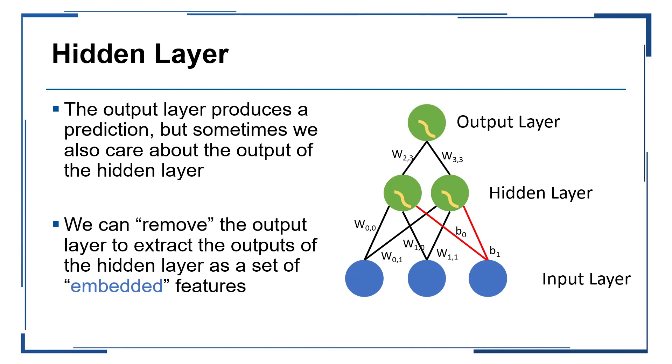As such, it is often the case that we may sometimes care more about the features that are learned within the model more so than the final prediction itself. In some cases, particularly in transfer learning where we want to train a model for one task and ultimately adapt it to work for a different task, we can remove the output layer after the model has been trained and use the penultimate layer, the final hidden layer, as a set of embedded features that describe the raw inputs in a way that is better suited for a given prediction task.